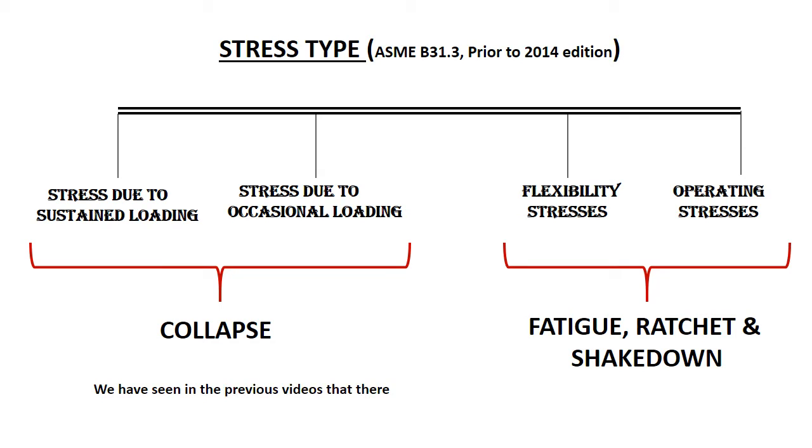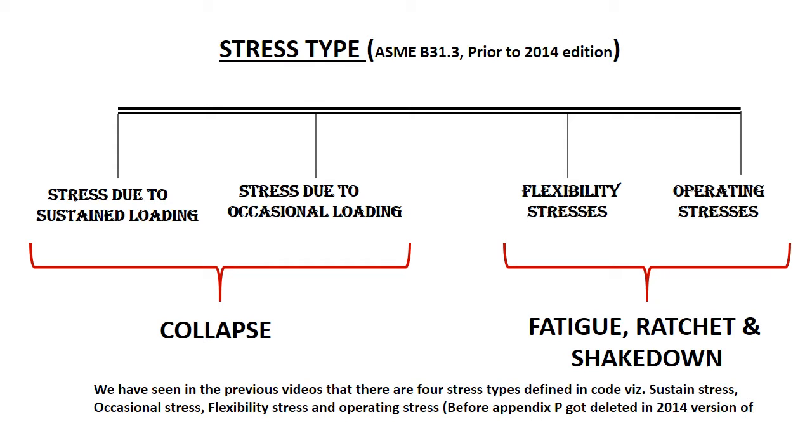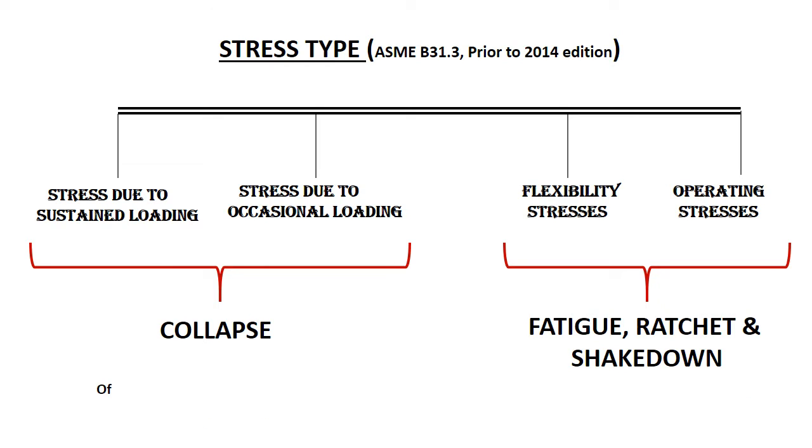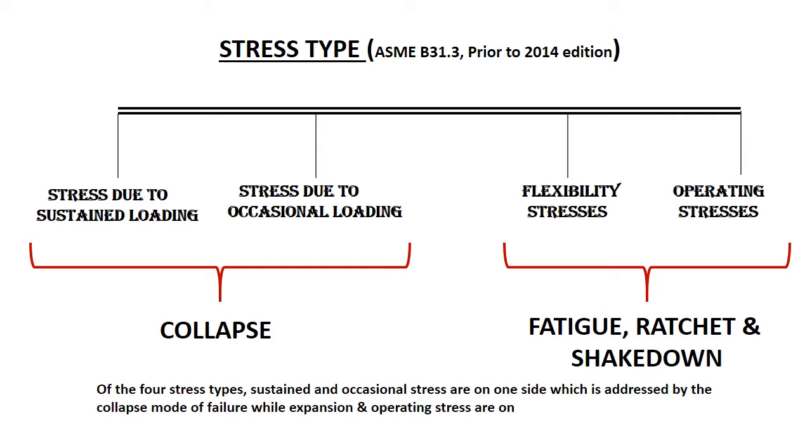We have seen in previous videos that there are four stress types defined in the code: sustained stress, occasional stress, flexibility stress, and operating stress. Before Appendix P of the later 2014 version of B31.3, of the four stress types, sustained and occasional stress are on one side which is addressed by the collapse mode of failure, while expansion and operating stress are on the other side which is focused on fatigue, ratchet, and shakedown.